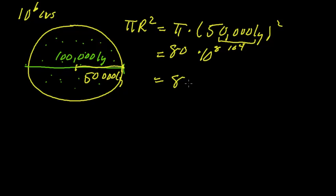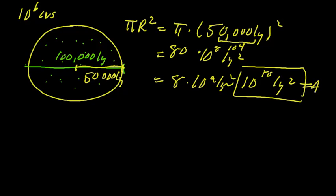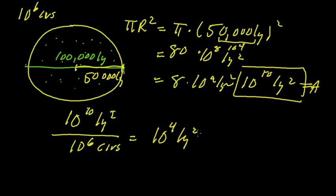And so this is about 8 times 10 to the 9th. And I'm just going to round it a little bit to just call this 10 to the 10. And I've been a little sloppy here because the units are in light year squared. And here is the area. 10 to the 10 light year squared is the area of the Milky Way galaxy. And we divide that up into 10 to the 6th civilizations. So I get 10 to the 10 light year squared divided by 10 to the 6th civilizations. So that translates to 10 to the 4 light year squared per civilization.